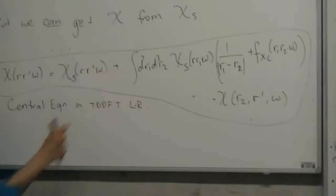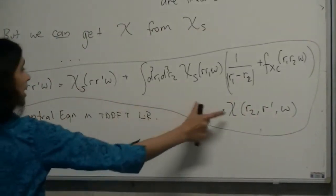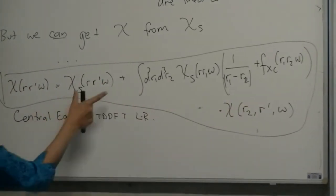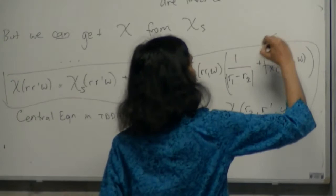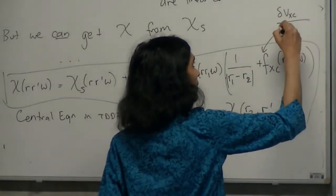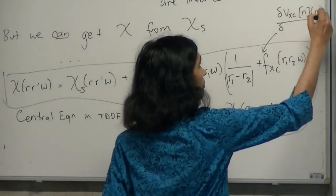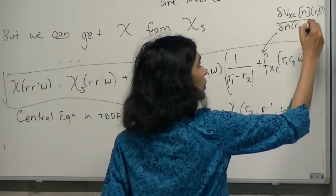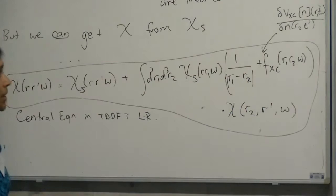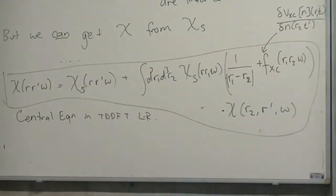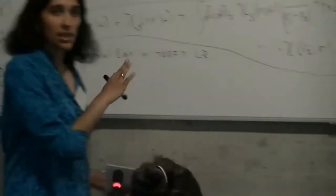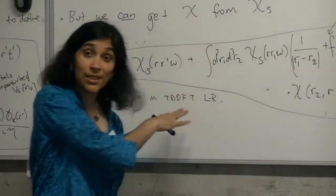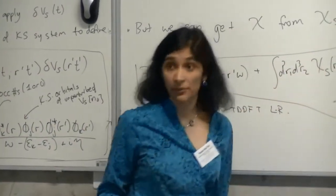We can get chi from chi_S using functional differentiation — taking the definition of chi, using the functional chain rule, playing with the equations to get the exchange-correlation kernel. The result is a Dyson-like equation: chi equals chi_S plus chi_S times [1/|r₁-r₂| plus f_xc] times chi, where the integral is over r₁ and r₂. This is the central equation in TDDFT linear response. It tells you how to get the interacting density-density response function from the Kohn-Sham response function plus the exchange-correlation kernel f_xc.